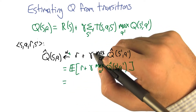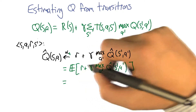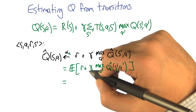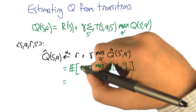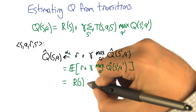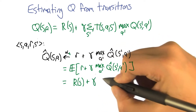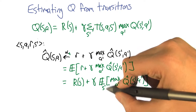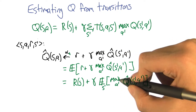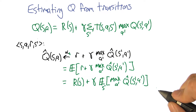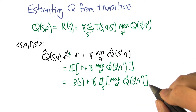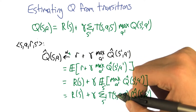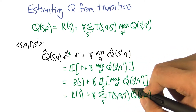And what is that expected value? The linearity of expectation says that we can actually move the expectation and break up the sum. So the expected value of the reward is actually R of S. The gamma comes out because of the linearity of expectation. And then what we're left with is the expectation over all next states of the maximum estimated Q value of the next state.